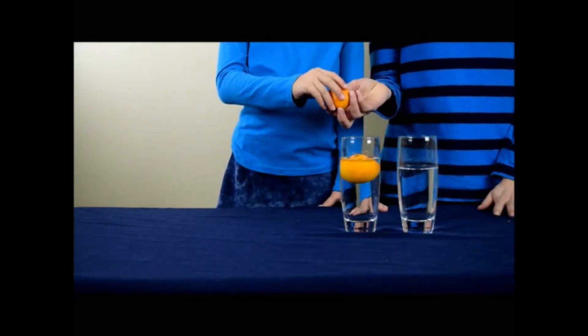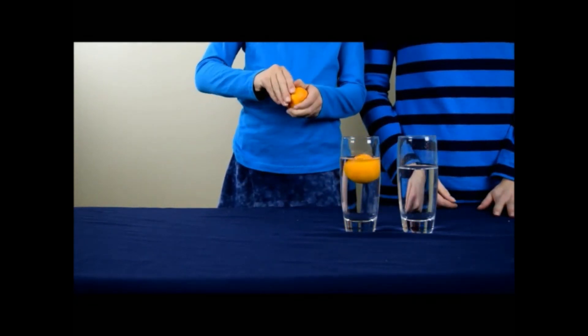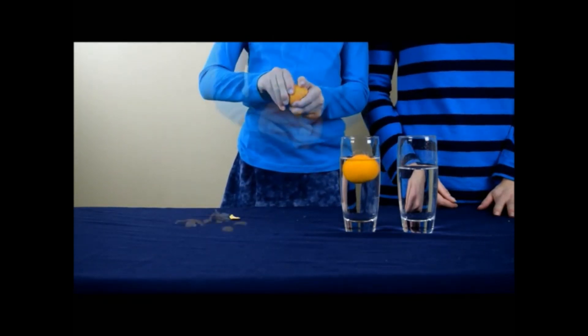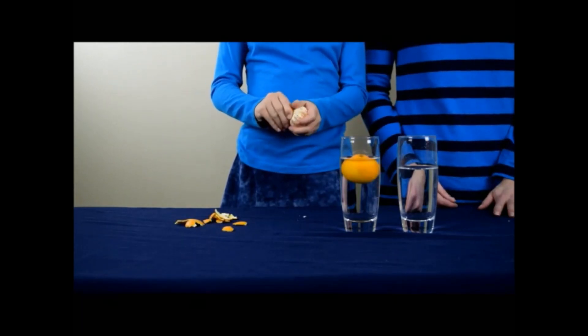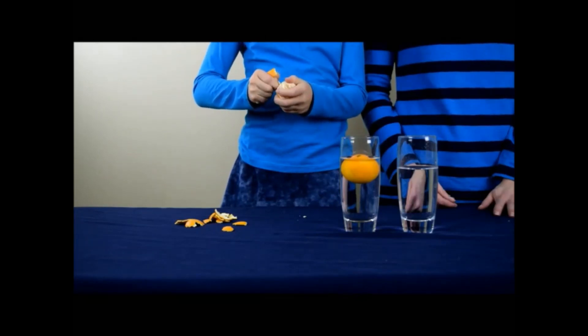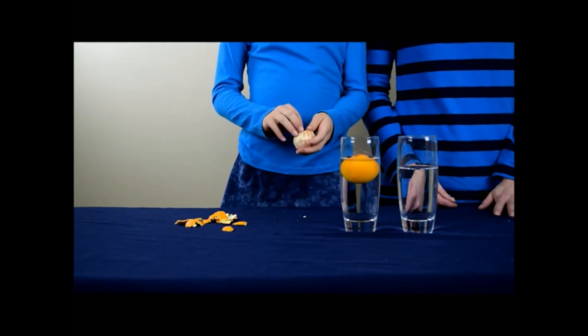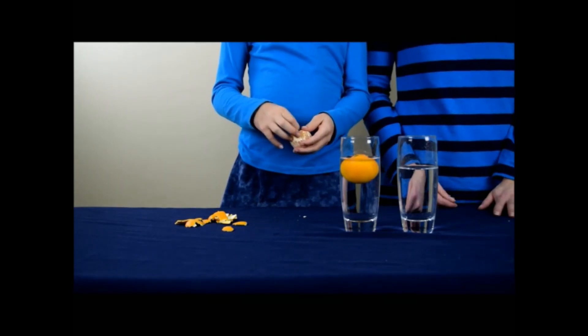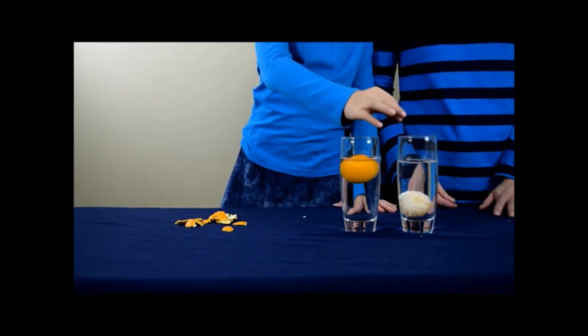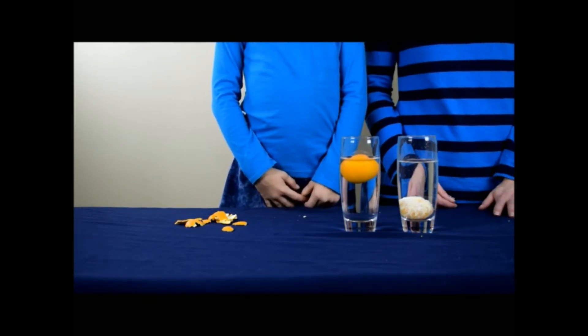For the second orange, we are going to remove the peel. Once the peel is removed, we're going to put the orange into the second glass. And as you can see, this orange sinks.